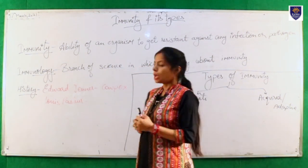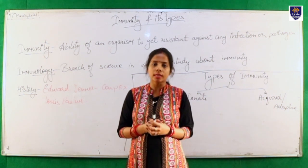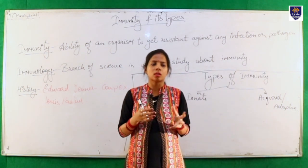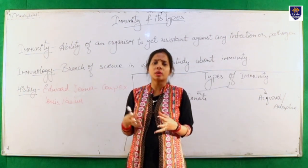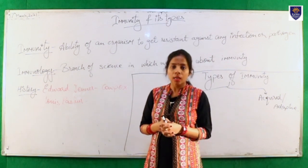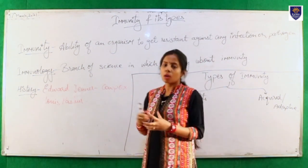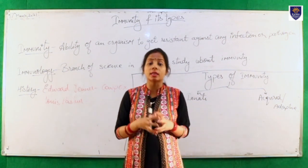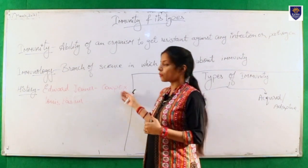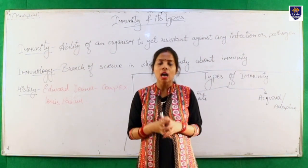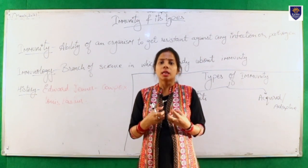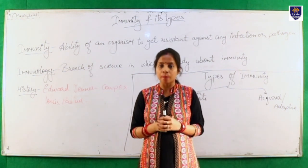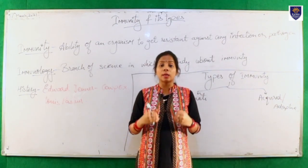What did Edward Jenner do? He isolated the pus from cowpox and treated patients who were suffering from smallpox. He observed that they gained immunity and were cured of smallpox by the injection of cowpox. He then proposed the idea that if we inject any kind of immunogen — a molecule that can cure a particular disease — we can cure a particular person.